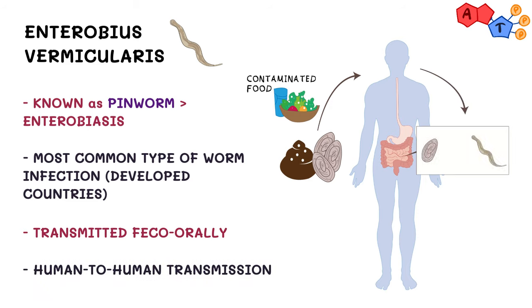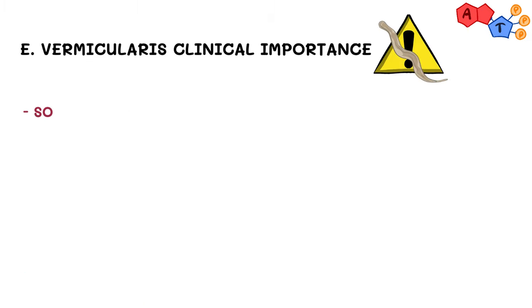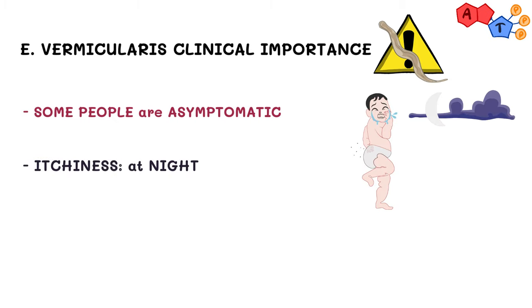After transmission, eggs mature into larvae which live in the small intestine. At night, the gravid pinworm migrates to the perianal region to lay down its eggs. Some people are asymptomatic, while others show symptoms particularly related to the perianal area, including itchiness specifically at night, therefore affecting the quality of sleep.